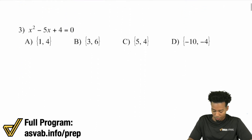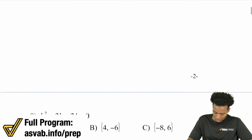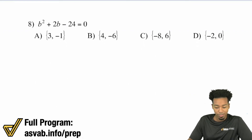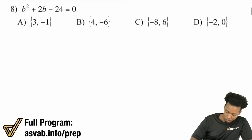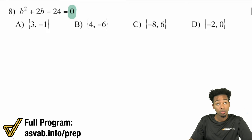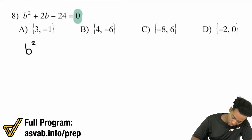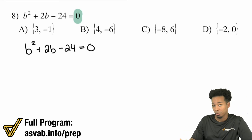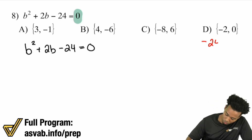Let's keep looking at more examples. Let me find some tougher ones — I like number 8. We have b squared plus 2b minus 24 equals 0. We already have zero on the right side, so we're good to go. We need to factor, so my question is: what are the factors of negative 24 that add up to positive 2? When finding factors of a negative number, one number will be positive and one will be negative, since two positives or two negatives can't multiply to a negative.